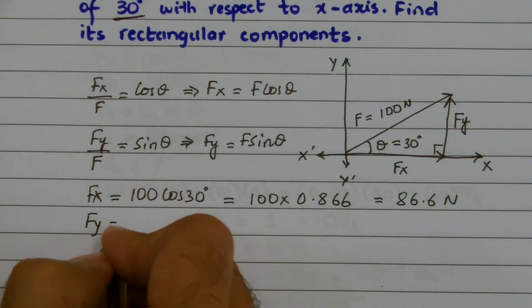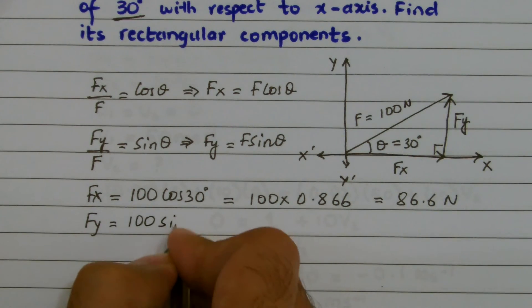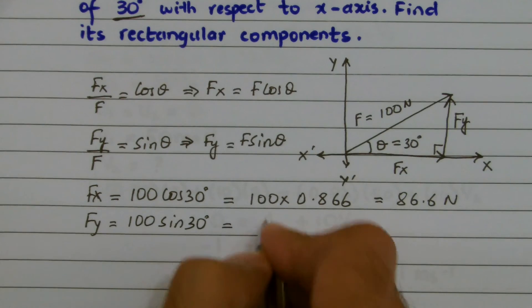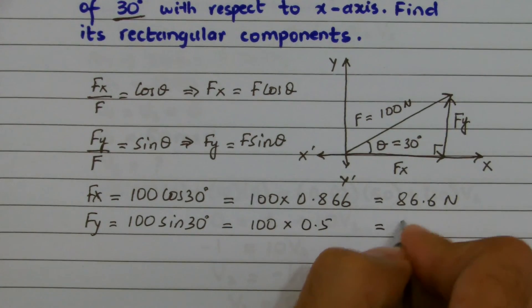Similarly, fy equals f sin theta. The amount of force is again 100, sin 30 degrees. Sin 30 is 0.5, so 100 into 0.5, I get 50 N.